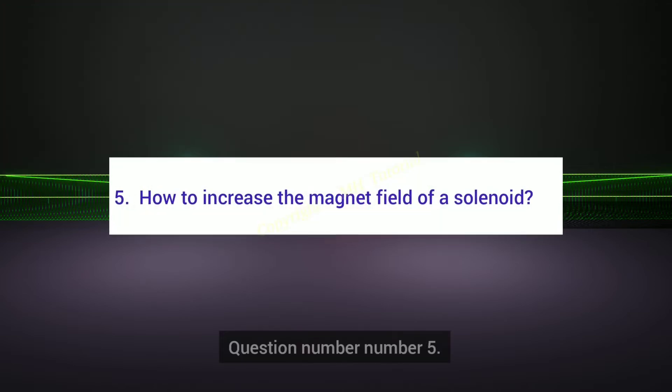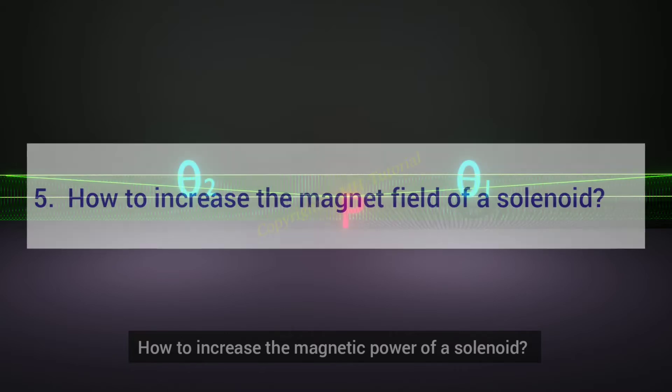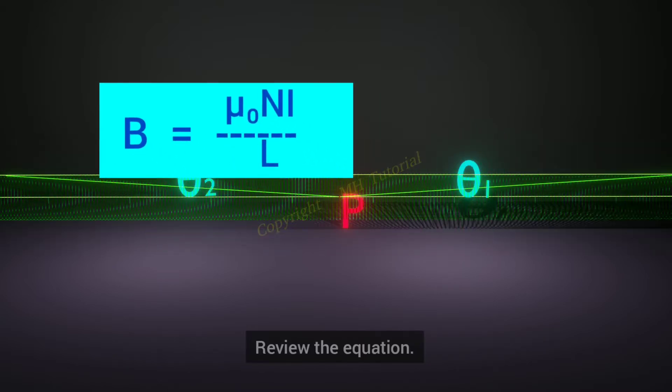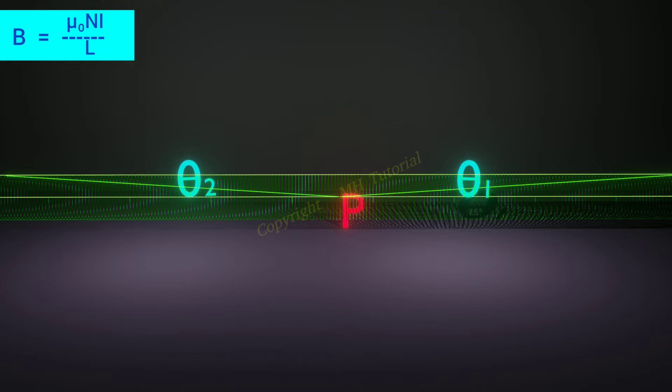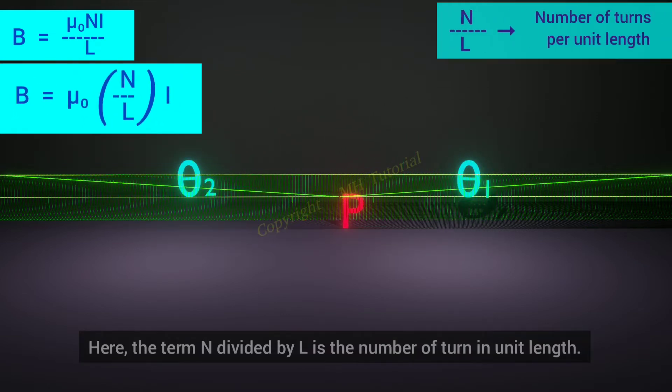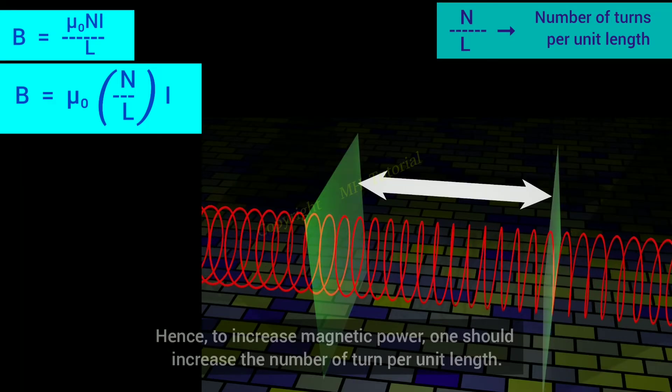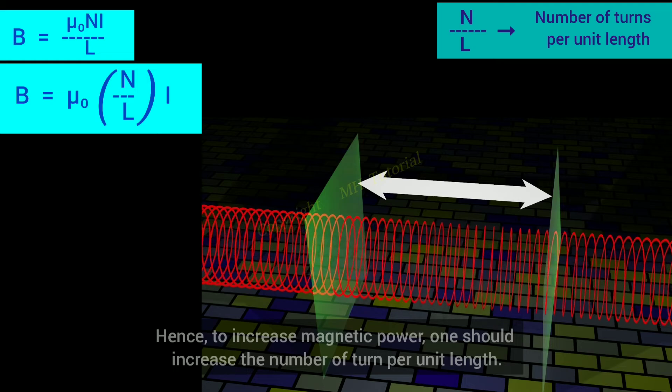Question number 5. How to increase the magnetic power of a solenoid? Review the equation. Here, the term n divided by L is the number of turn in unit length. Hence, to increase magnetic power, one should increase the number of turn per unit length.